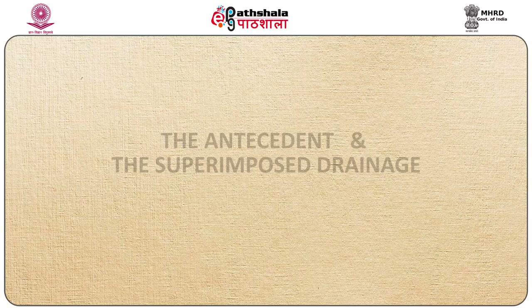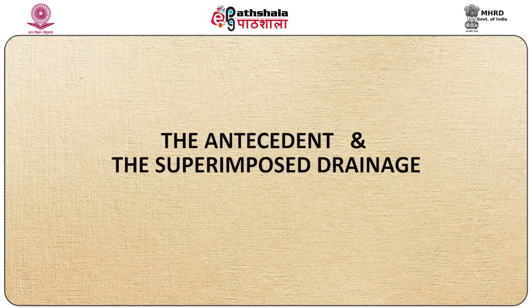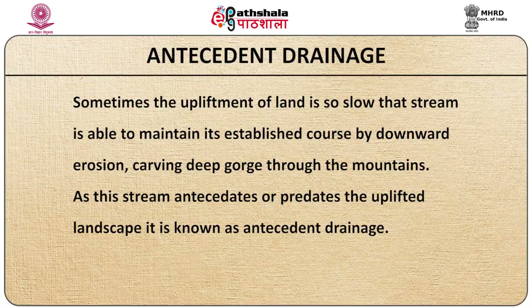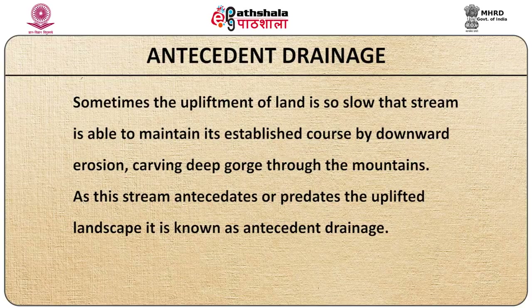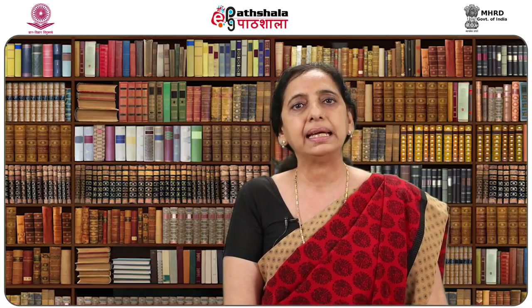Let us now study two other important drainage patterns: antecedent and superimposed drainage. Sometimes the upliftment of land is so slow that the stream is able to maintain its established course by downward erosion, carving a deep gorge through the mountains. As the stream antecedes or predates the uplifted landscape, it is known as antecedent drainage. The valleys that were eroded may develop new tectonic ridges on their landscape, and the river, in some cases, is able to maintain its valley across the tectonic ridge, thereby forming the antecedent stream. That means the river is antecedent to the deformation of the landscape.